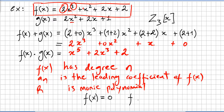If f(x) equals zero, it has no degree. And if f(x) consists only of a single coefficient — no x terms — we call it a constant polynomial, as with functions.